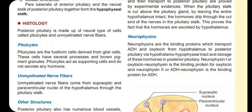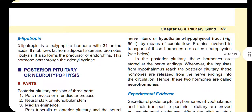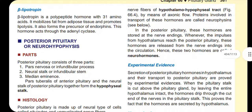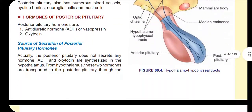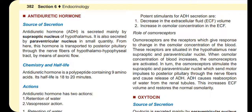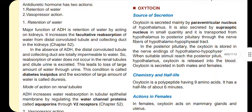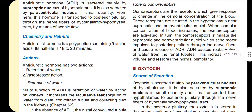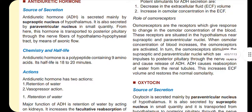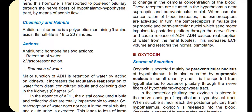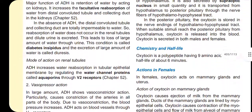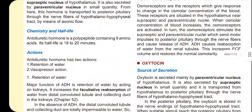Neurophysins are the binding proteins that store ADH in the hypothalamus. The source of antidiuretic hormone is the hypothalamus, specifically the paraventricular nucleus in small quantity. The source of oxytocin is primarily the paraventricular nucleus of the hypothalamus, and also the supraoptic nucleus. Oxytocin acts on the uterus during the gestation period.